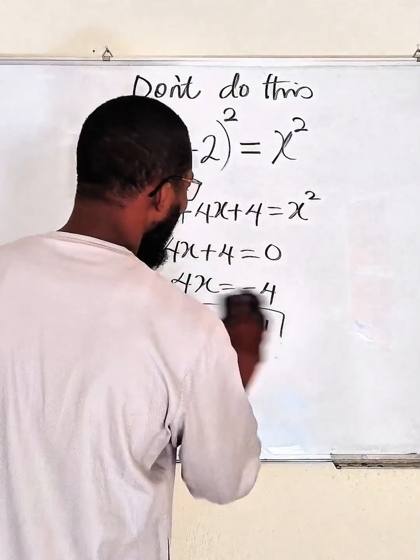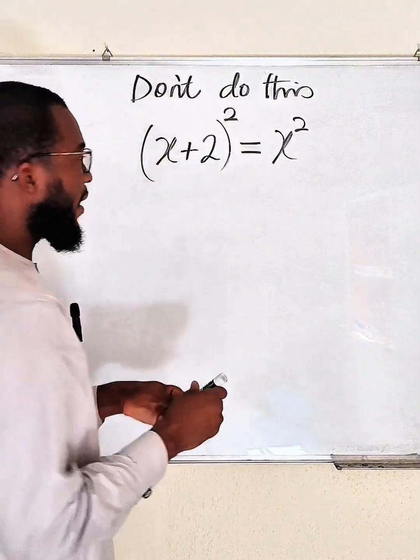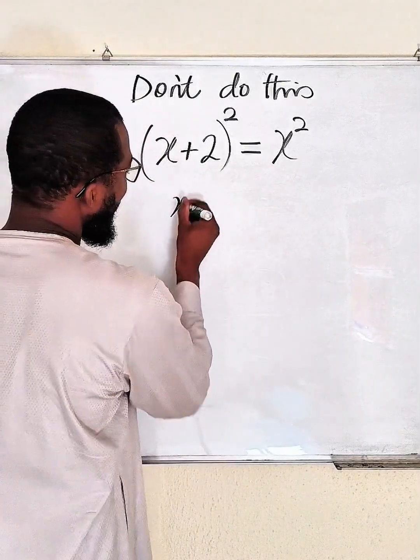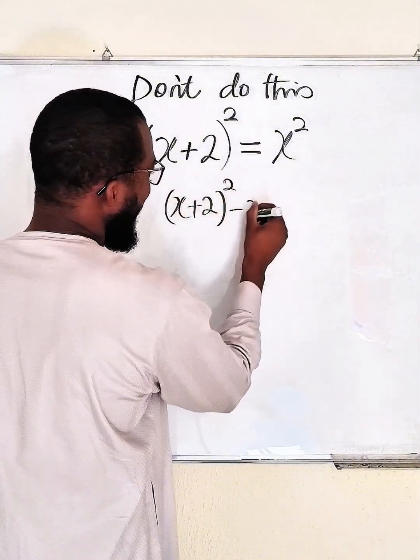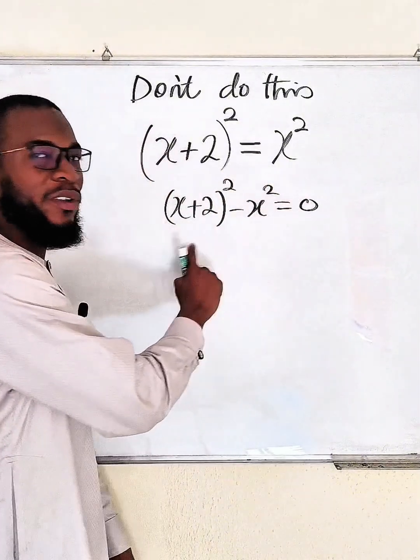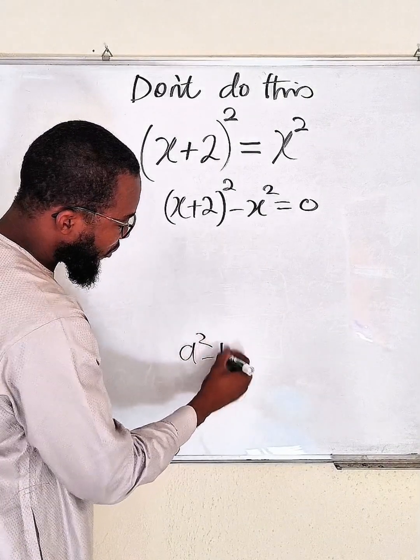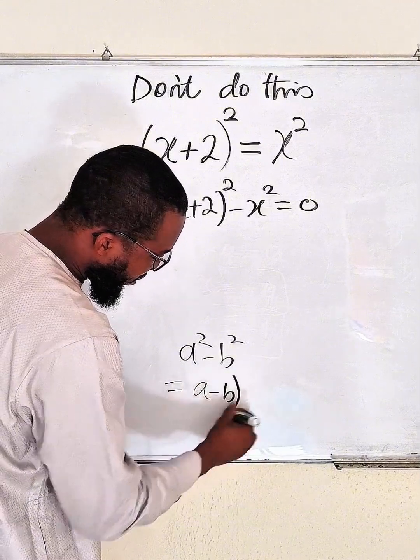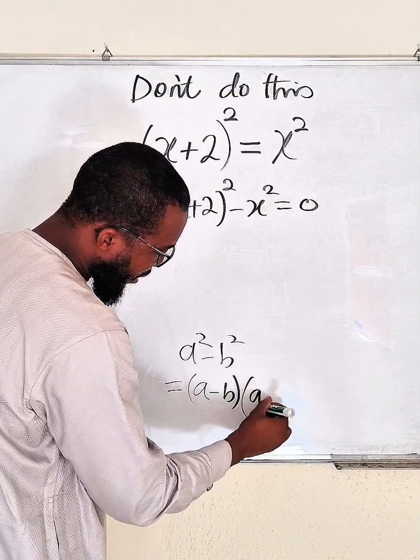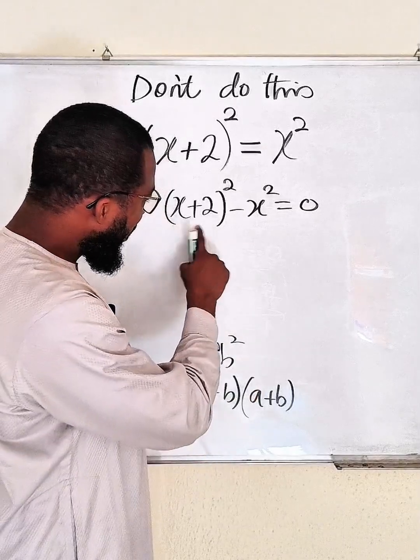Whenever I have a difference of 2 squares, I always like to apply that. So instead, bring this one inside. We have (x+2)² - x² equal to 0. This is nothing but difference of two squares. Remember, a² - b² is equal to (a-b) × (a+b), difference of two squares, for which a is the whole of this and b is this.